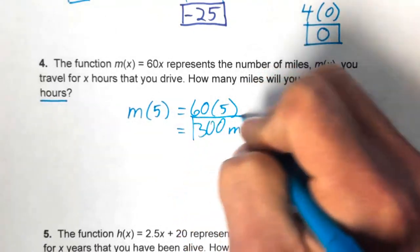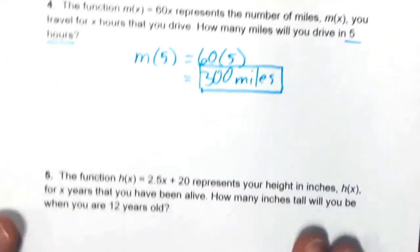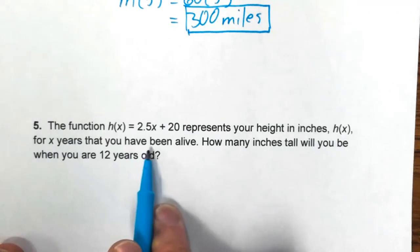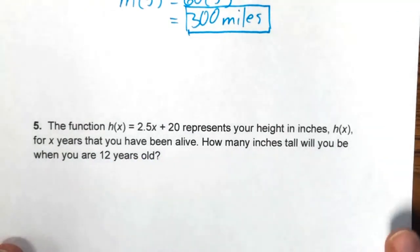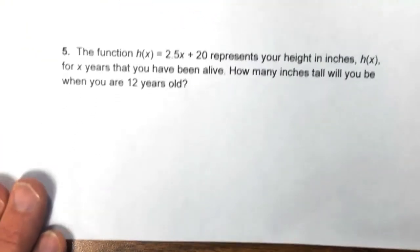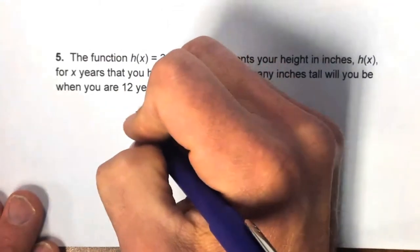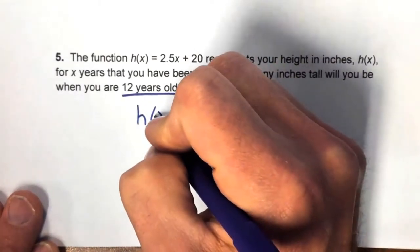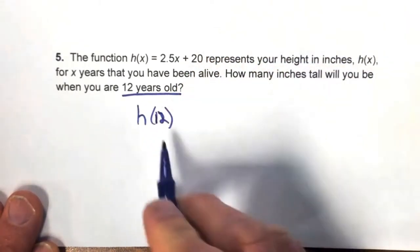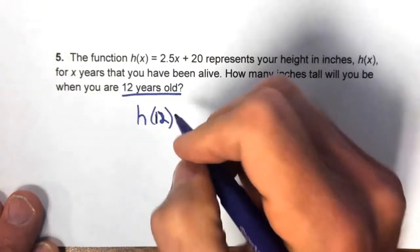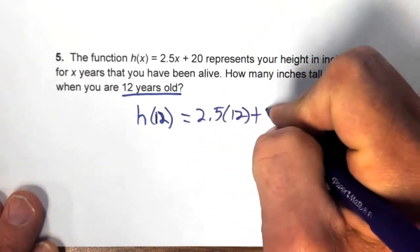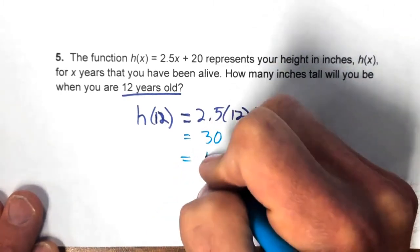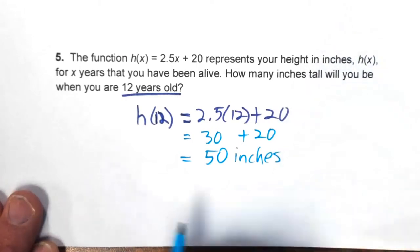Number five: the function h(x) = 2.5x + 20 represents height in inches for x years alive. To find height at 12 years old, substitute 12 for x: h(12) = 2.5 times 12 + 20 = 30 + 20 = 50 inches.